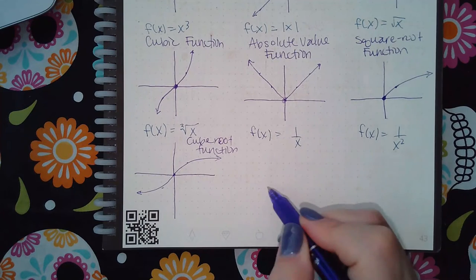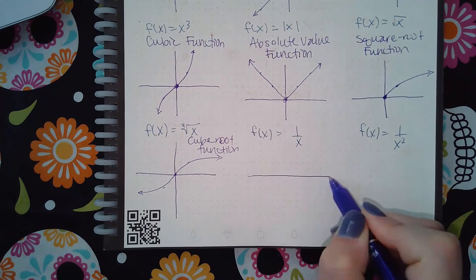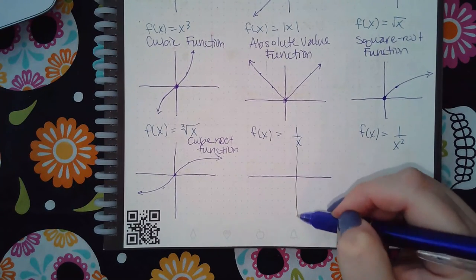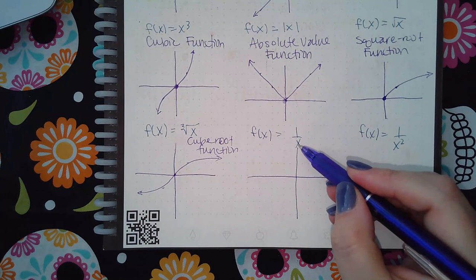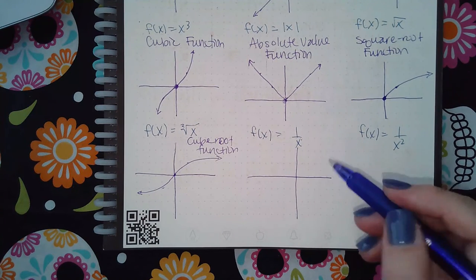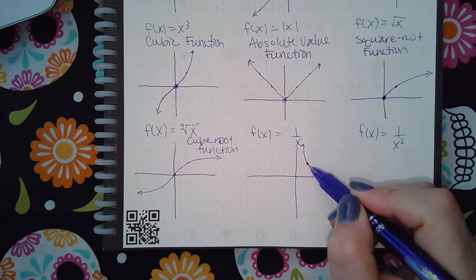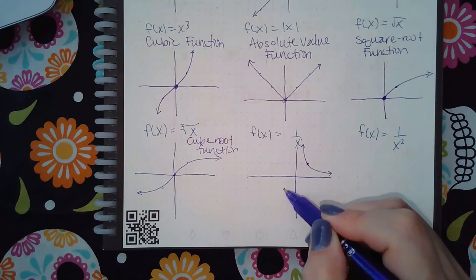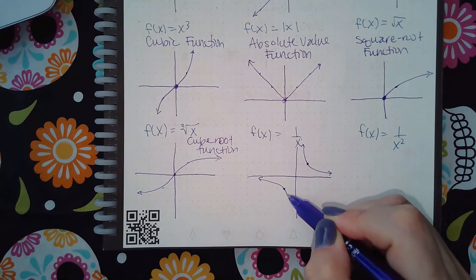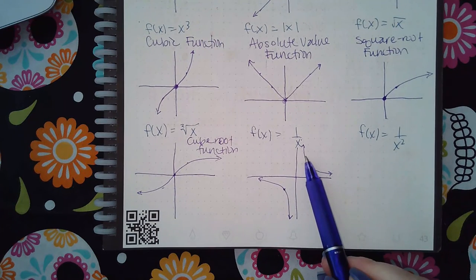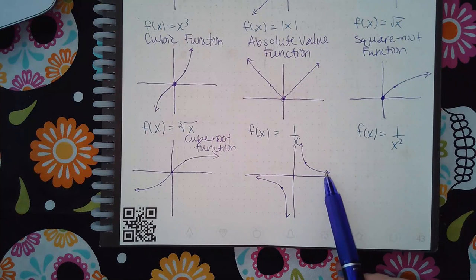And then here we've got the rational functions. So there's a difference between when the variable downstairs is just an exponent of one and then it'll look like this.